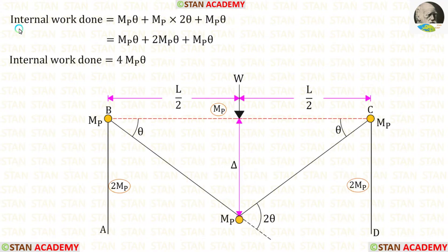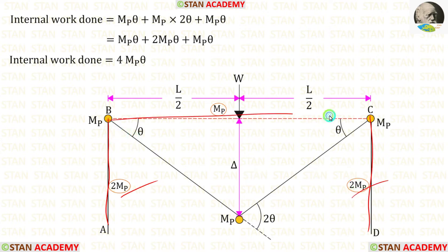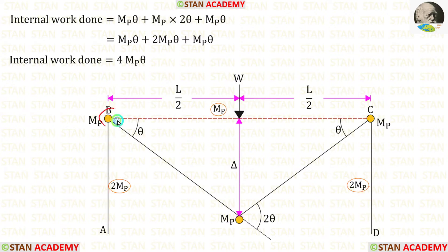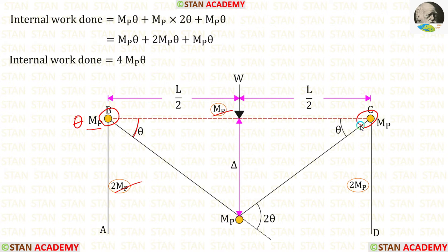Now let us find the internal work done. For the columns the plastic moment capacity is 2MP and for beam BC it is MP. At joint B we have a plastic hinge; in joints we select the smaller MP, so we multiply MP by angle θ. At joint C we also have a plastic hinge; we again select MP and multiply by angle θ.